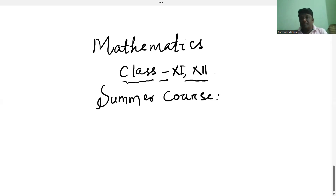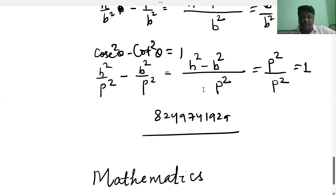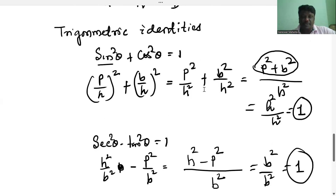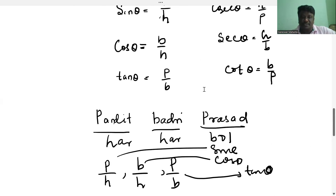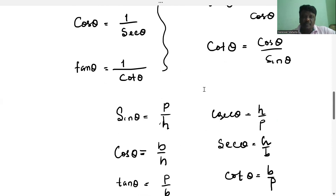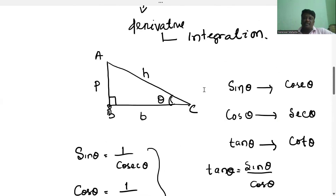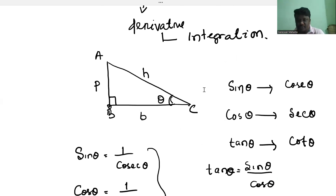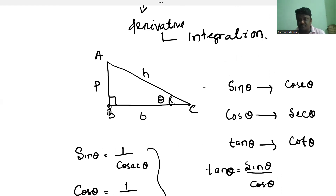In the previous class, we have already discussed some problems of the trigonometric functions — the basic concept of trigonometric identities, considered for right-angle triangles, which involves base, perpendicular, and hypotenuse. And six trigonometric ratios we have discussed: sin, cos, tan, cosec, sec, and cot.